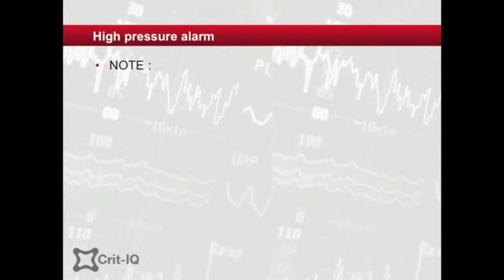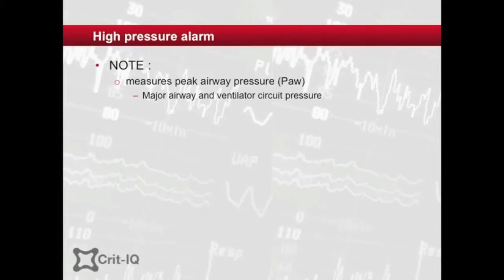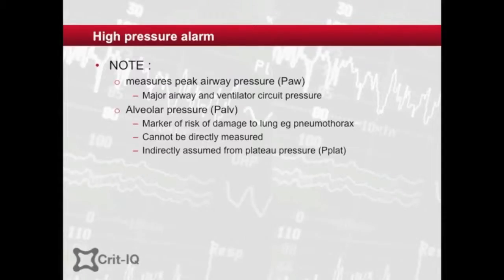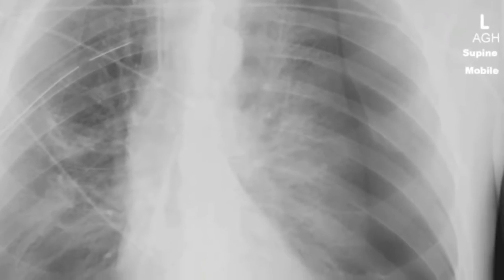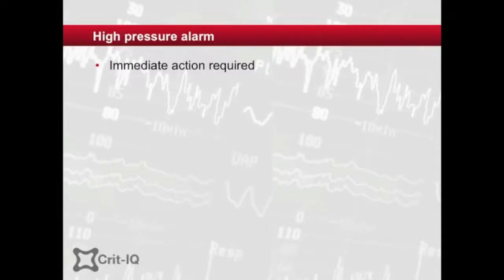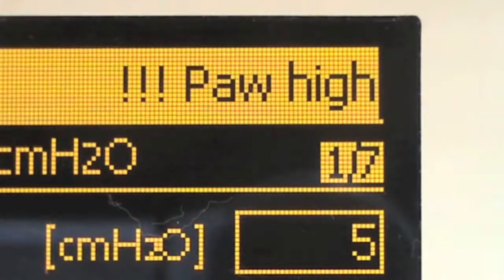It should be noted that the alarm responds to the peak airway pressure, which largely reflects major airway and circuit pressures. It does not measure effective alveolar pressure, which is more relevant to pressure-induced damage to the lungs. The list of causes includes some conditions that can be rapidly fatal. This, combined with potential hypoventilation, mandates immediate attention when the high pressure alarm is activated.